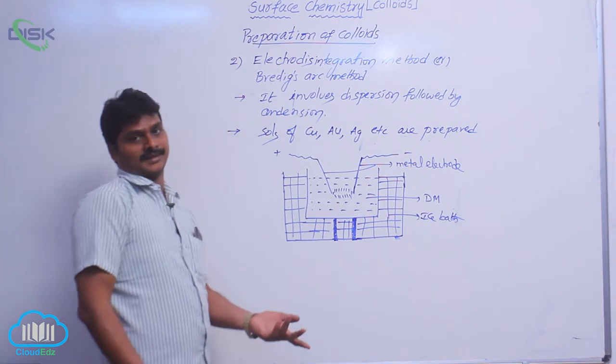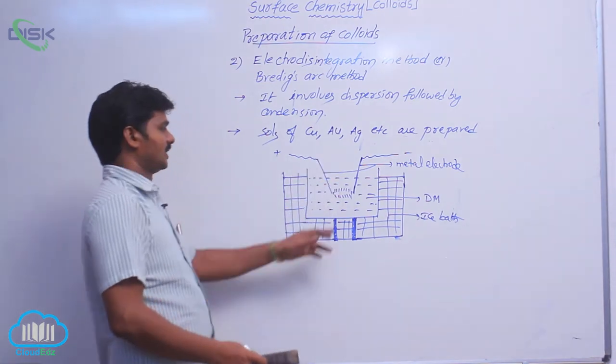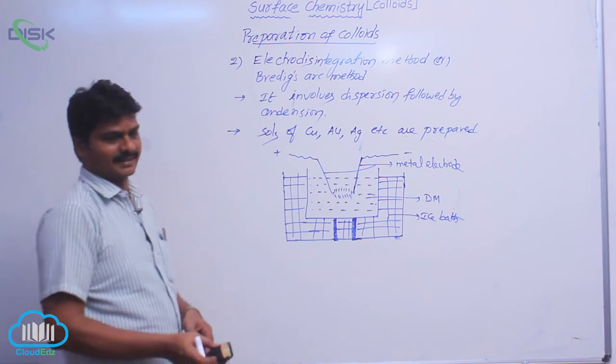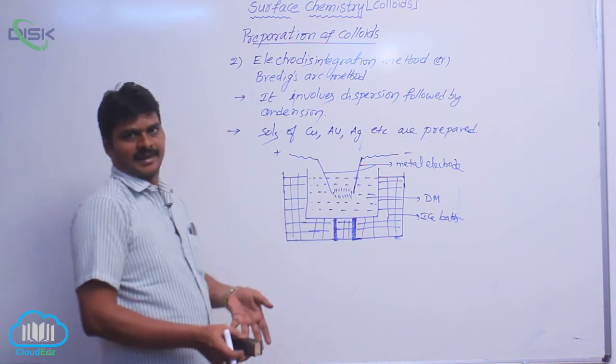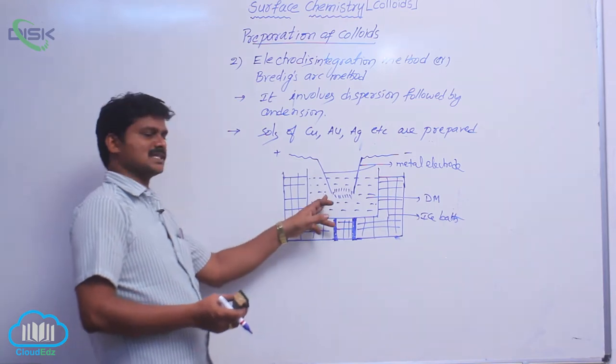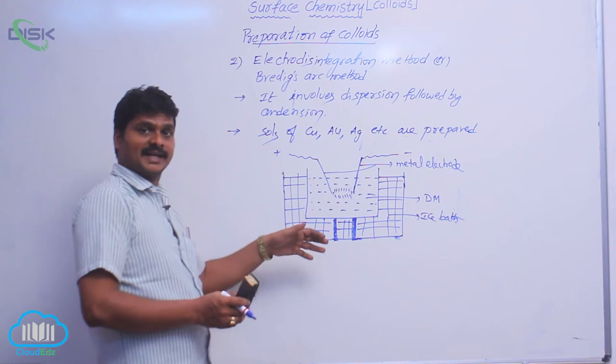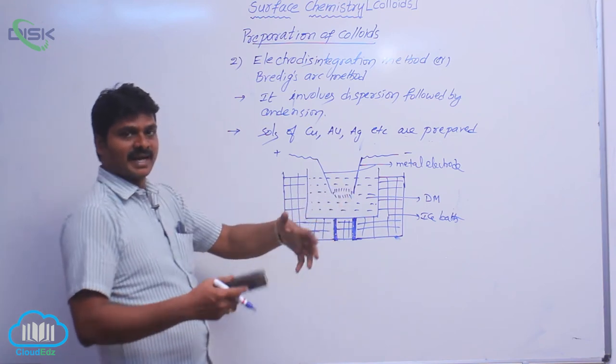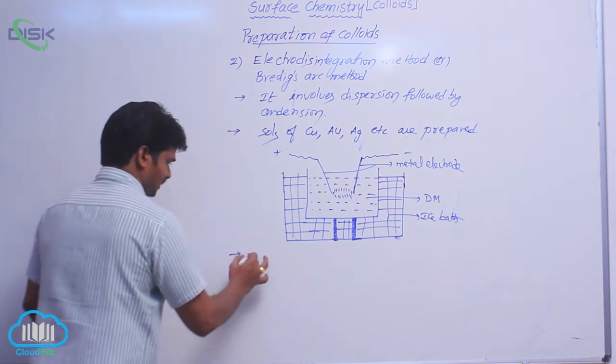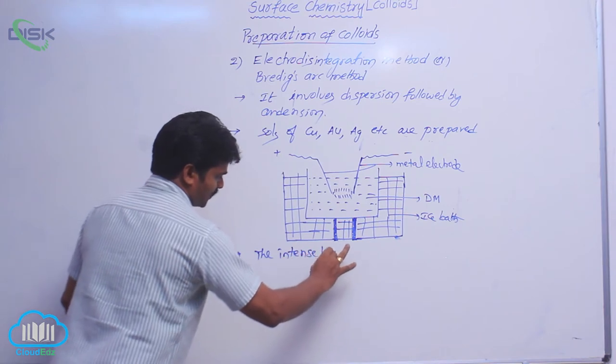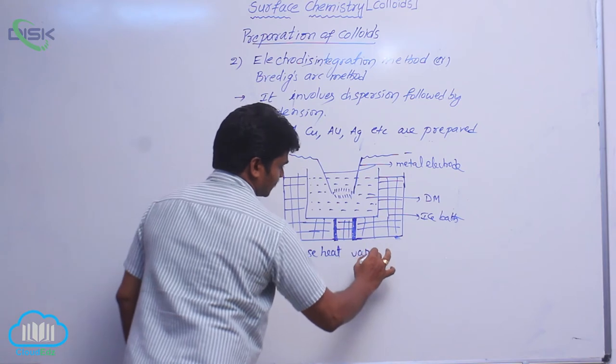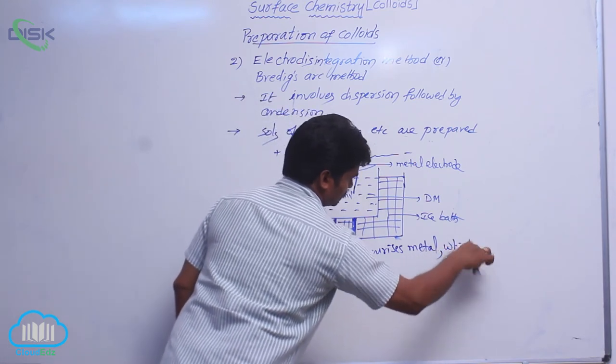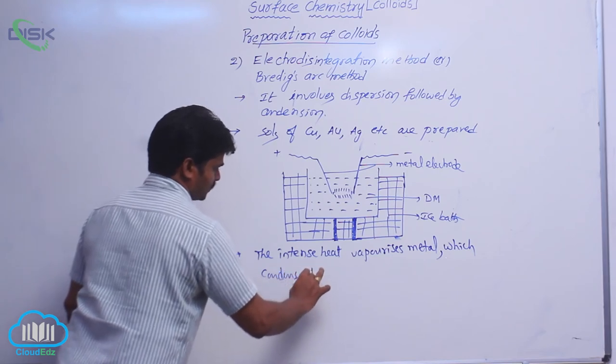When the electricity is switched on, these electrodes are heated electrically. And at the same time arc is also heated. Because of intense heating, the metal atoms of metal arc evaporate. Evaporation occurs because of intense heating. The metal vapors immediately, because they are in a dispersion medium, they immediately condense to form the colloidal solution. The intense heat vaporizes metal, which condenses to metal salt.